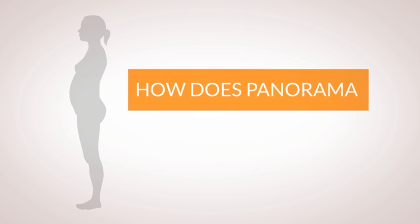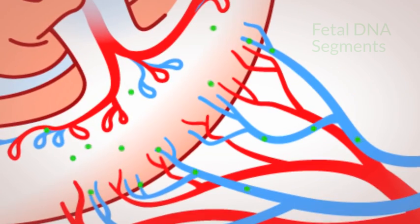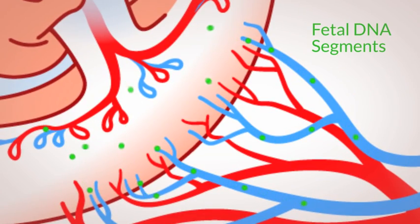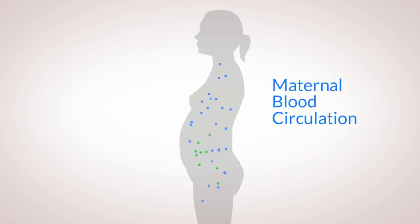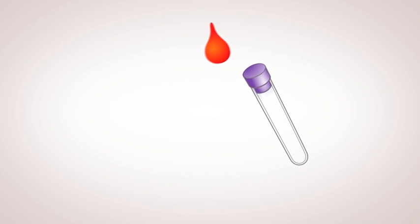How does Panorama test for these abnormalities? When a woman is pregnant, segments of DNA from the fetus enter the mother's bloodstream via the placenta. All the Panorama test requires is a simple blood draw from the mother.